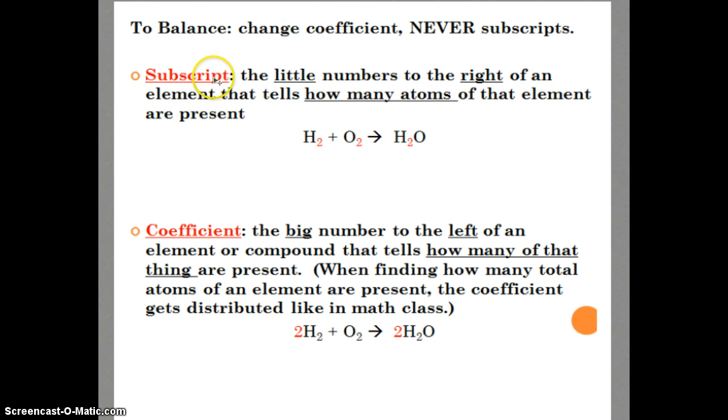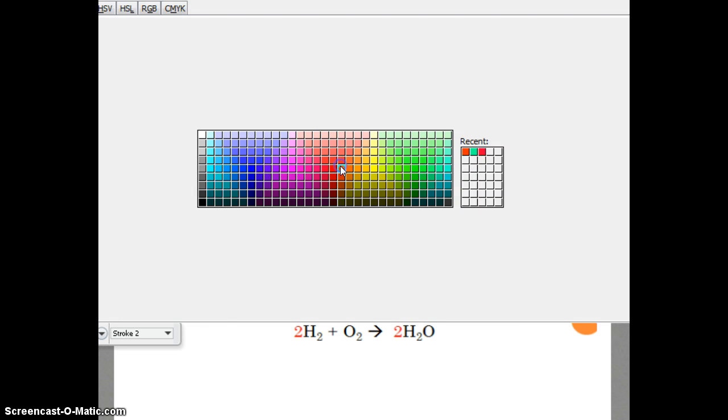Let's define those two words. Subscript: the little numbers to the right of an element that tells how many atoms of that element are present. Whenever you start balancing, we draw a line to separate our reactants from our products. Remember the arrow points to the product. I go through and simply write down all the elements that are involved on both sides. I use my subscripts and say, over on the left, I have two hydrogens.